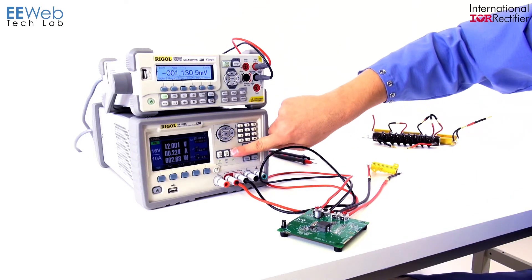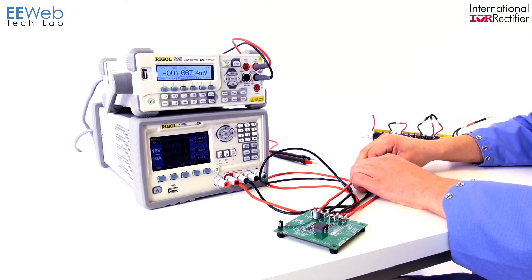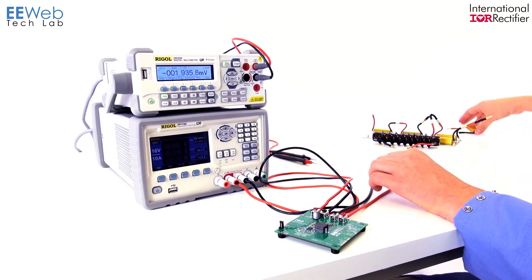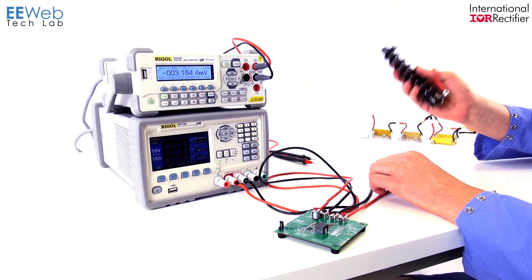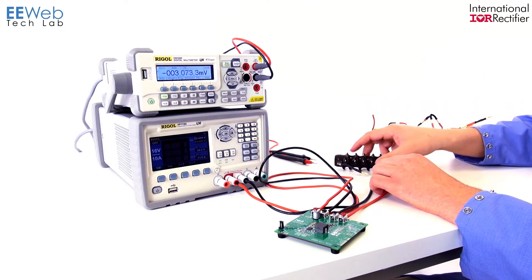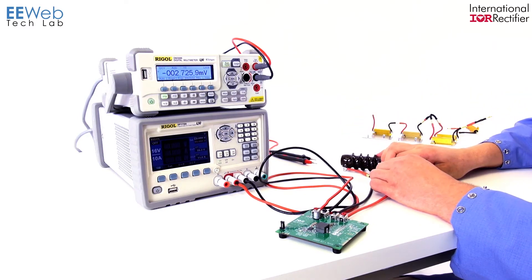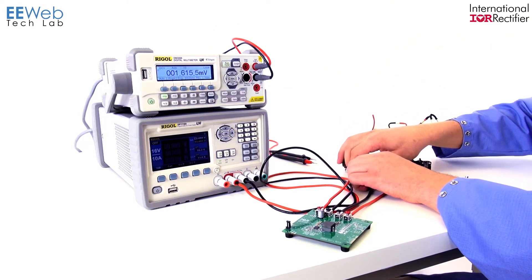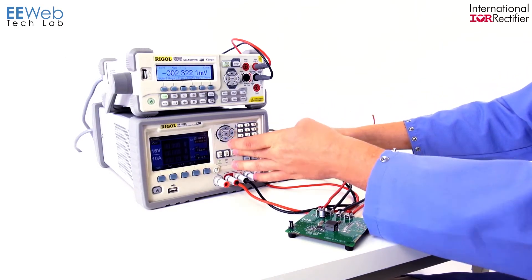So let's turn this off so I don't shock myself. Now this is a 0.1 ohm resistor, 10% capable of 200 watts. Obviously more than sufficient, and we'll turn our supply back on.